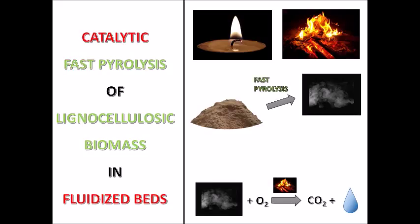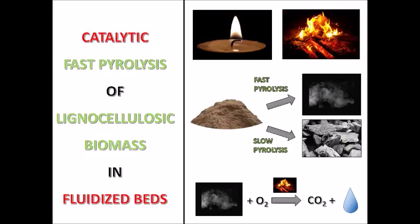Fast pyrolysis makes fumes and slow pyrolysis makes char. The idea behind fast pyrolysis is to heat up the feed material very quickly so it all turns into fumes.